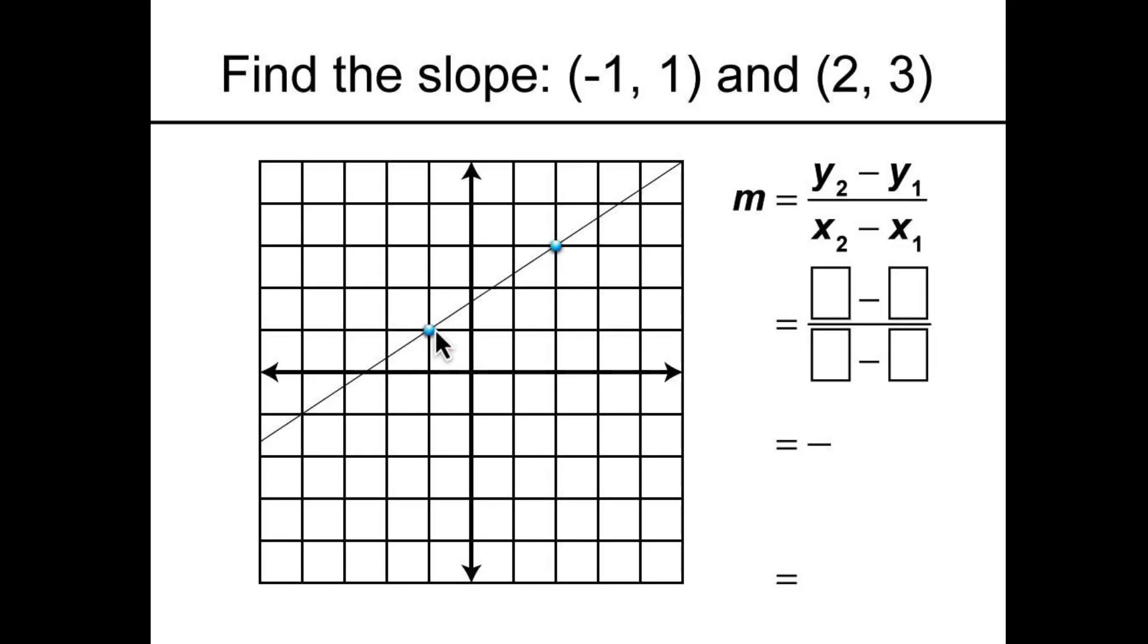To find the slope of the line connecting these points, use the slope formula. First, label the coordinates x1 and y1, then x2 and y2.